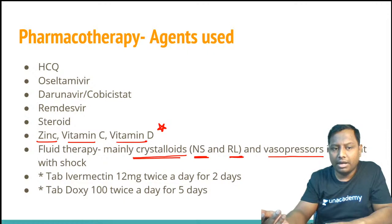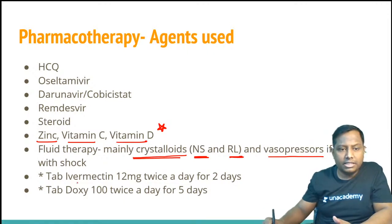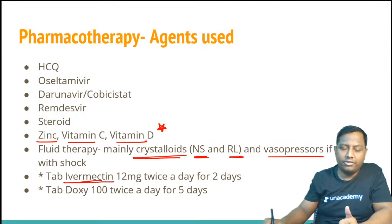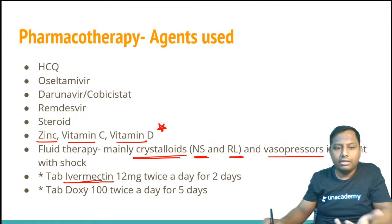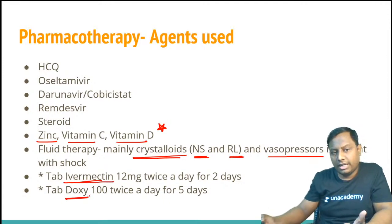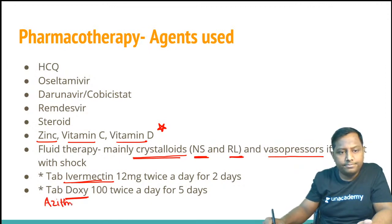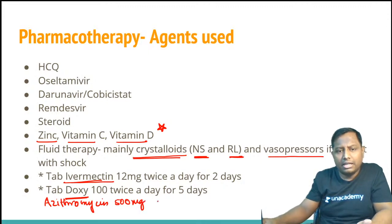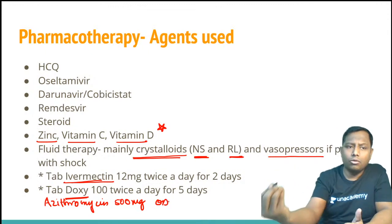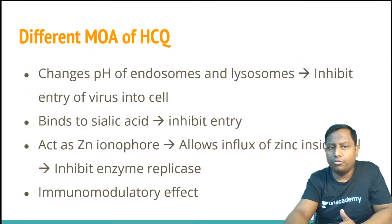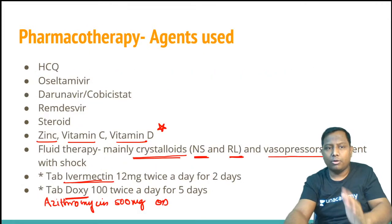We are also using drugs like ivermectin — this is according to the most recent update from different hospitals. In my hospital also, they are using ivermectin and doxycycline. Apart from that, azithromycin 500 mg is given to all patients who are having fever. These are the drug lines we are currently using for COVID-19.